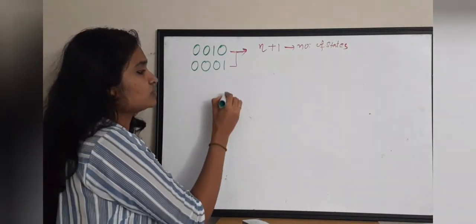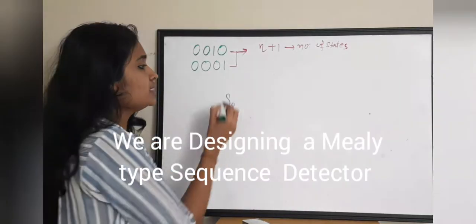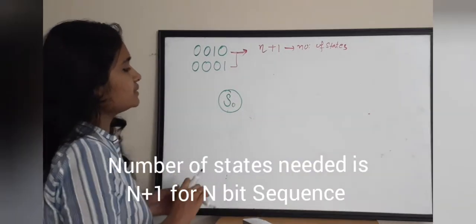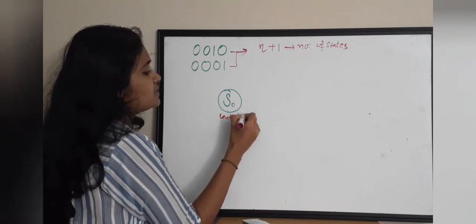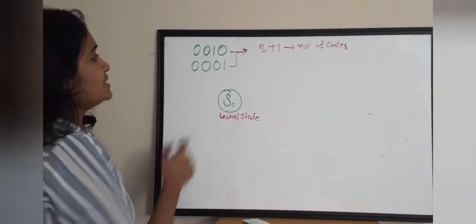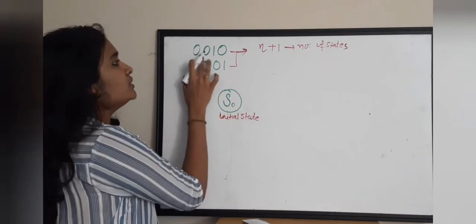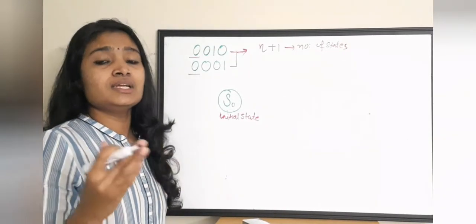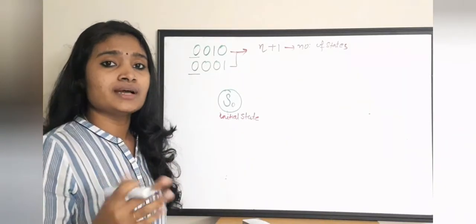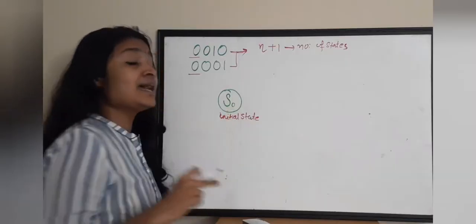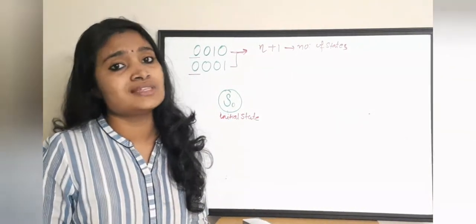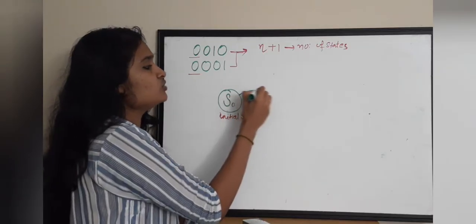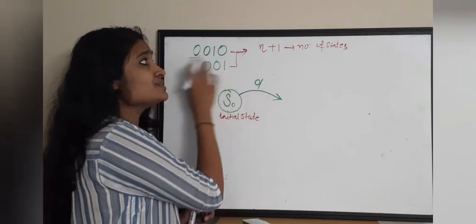My initial state is S0. While designing a sequence detector, this is how you have to think. Both sequences start with 0 0, so if you need progress in sequence detection, you should receive a 0 at the initial state. When you are at S0 and receive a 0, you can move further because there is progress in both sequences.